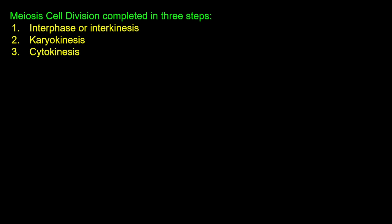Cell division is completed in three steps: first is interphase, then interkinesis, then karyokinesis, and then cytokinesis. The cell is prepared in interphase. Then the nucleus is divided — this process is called karyokinesis. Then the cytoplasm is divided — this is called cytokinesis.